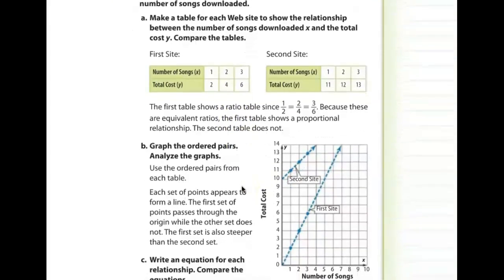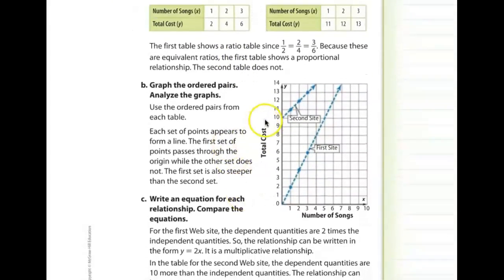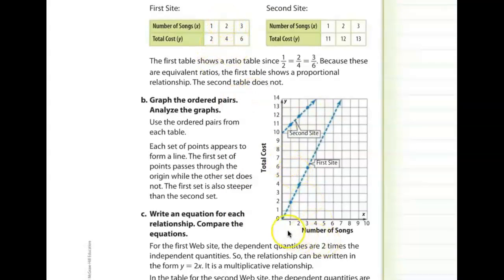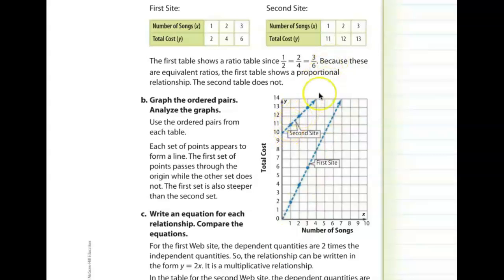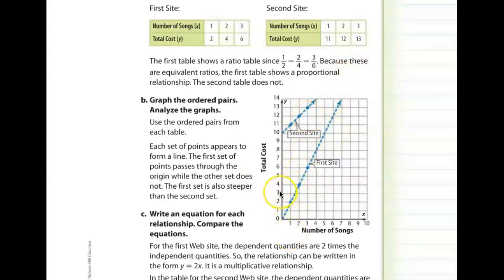When we graph the first table, it goes through the origin and increases by a factor of 2 each time — $2 for every song, a straight line going up. The second graph is also a straight line but doesn't go through the origin. If you purchase zero songs, there's still the $10 fee, so it starts up on the y-axis. This one is additive and the first is multiplicative.